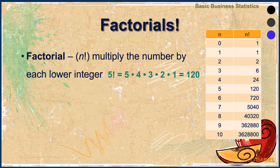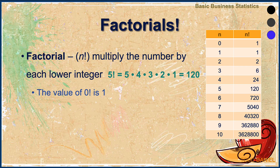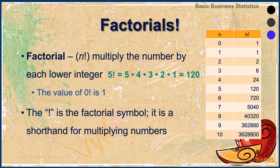A factorial is designated with a lowercase n followed by an exclamation point, and it means multiply the number by each lower integer. For instance, five factorial — written as 5! — is 5 times 4 times 3 times 2 times 1, which equals 120. Incidentally, the value of zero factorial is always one. The exclamation point is the factorial symbol; it's shorthand for multiplication. With values zero through ten: five factorial is 120, six factorial is 720, seven factorial is 5040.